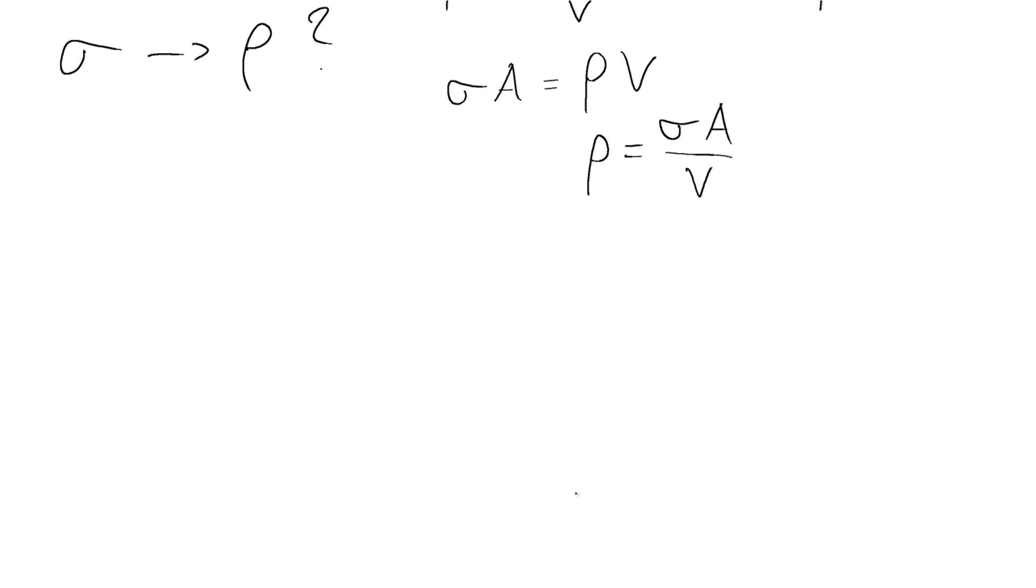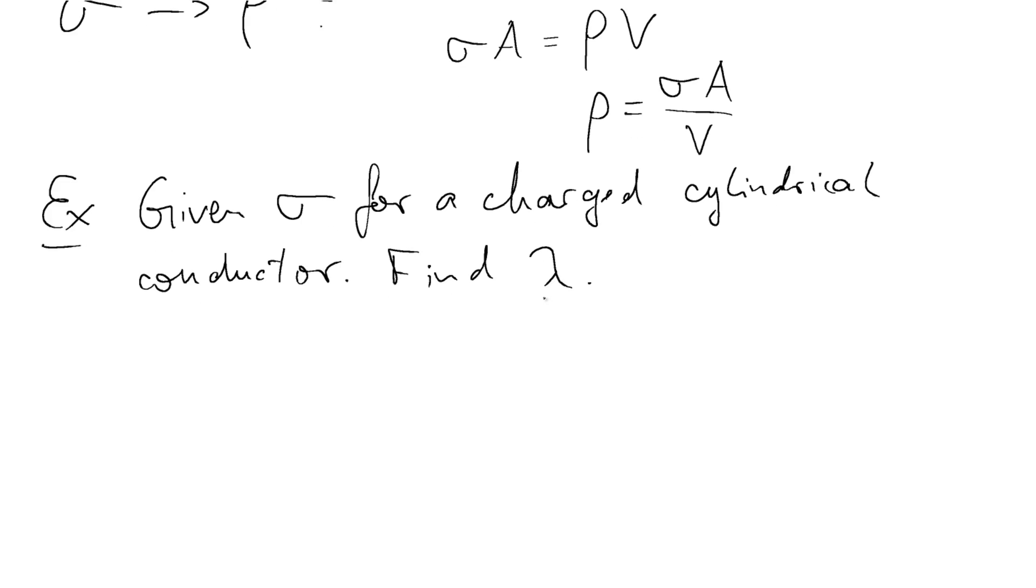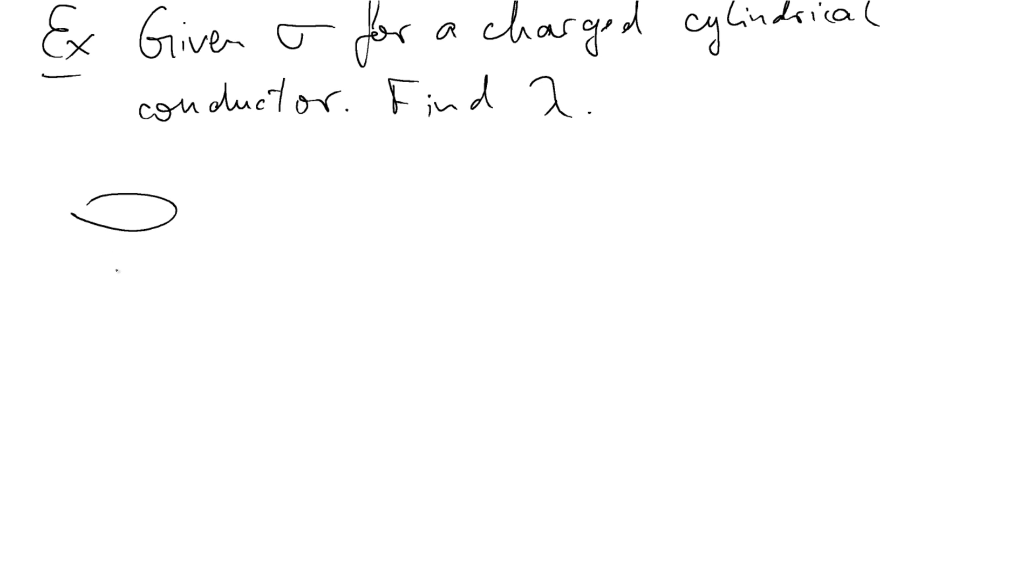Now in our example, we are given the area charge density sigma for a charged cylindrical conductor. And we're asked to find the linear charge density lambda. I'm just going to sketch that conductor real quick. It is cylindrical. So we have that cylinder here.